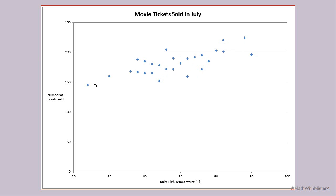We do not have a linear model right now because we don't have a constant rate of change — the points don't all line up into one nice straight line; they're scattered. But there might be an overall trend that falls roughly along a straight line, so we might be able to use a linear model as a good approximation or average of what's going on.